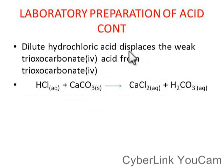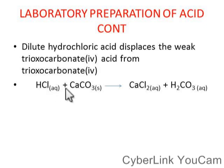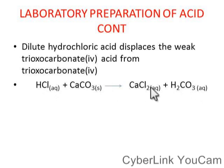Dilute hydrochloric acid displaces the weak carbonic acid from its salt. This is a dilute hydrochloric acid acting on a salt. The hydrogen combines with the carbonate radical to give H2CO3, and the chlorine combines with the calcium to give calcium chloride. Take note of that.